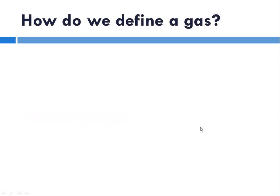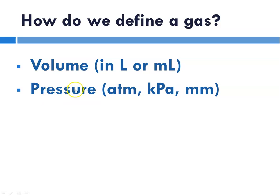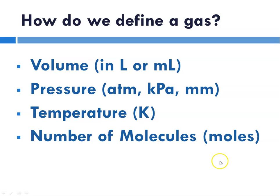What do we need to define a gas? You need to know the volume in liters or milliliters, the pressure generally expressed in atmospheres, kilopascals, or millimeters of mercury, the temperature in Kelvin, and the number of molecules or moles. Knowing these four things, you can completely define a gas.